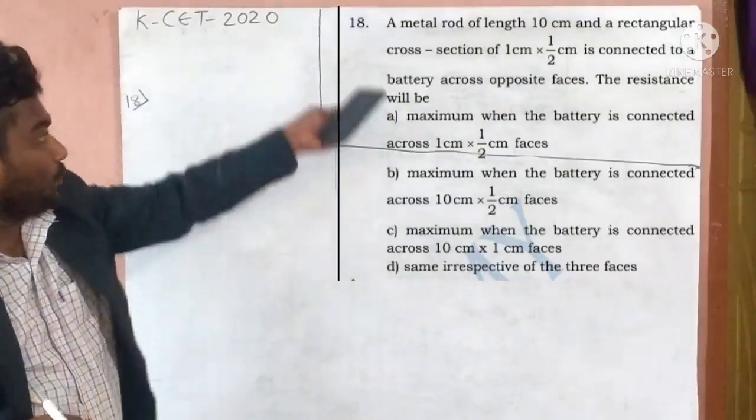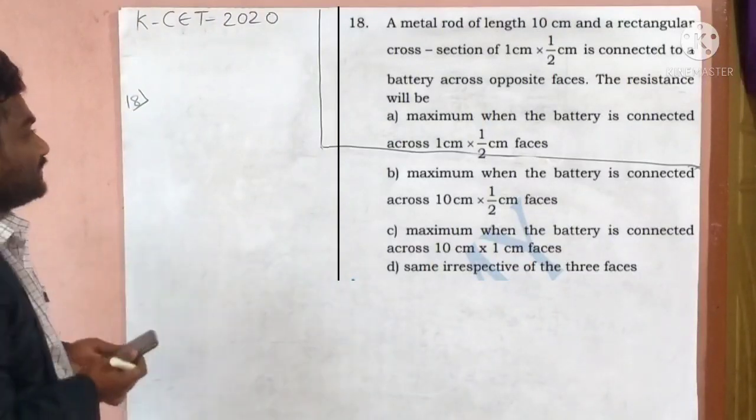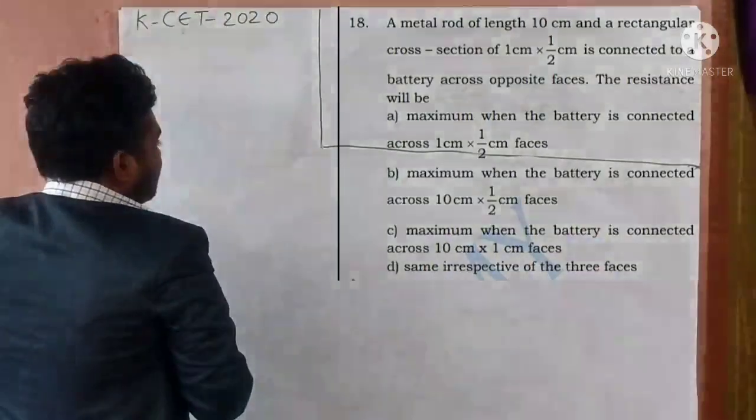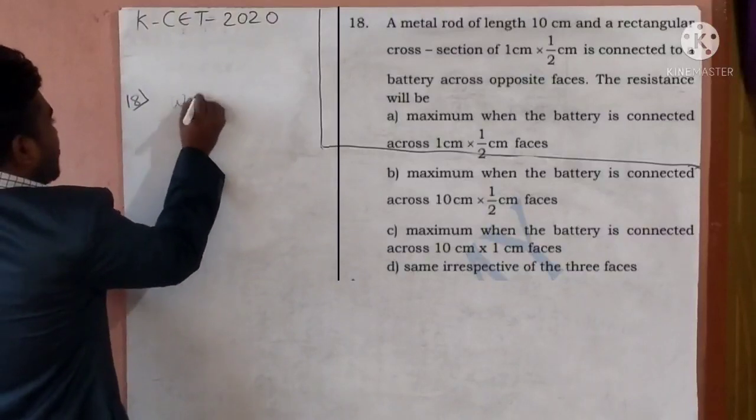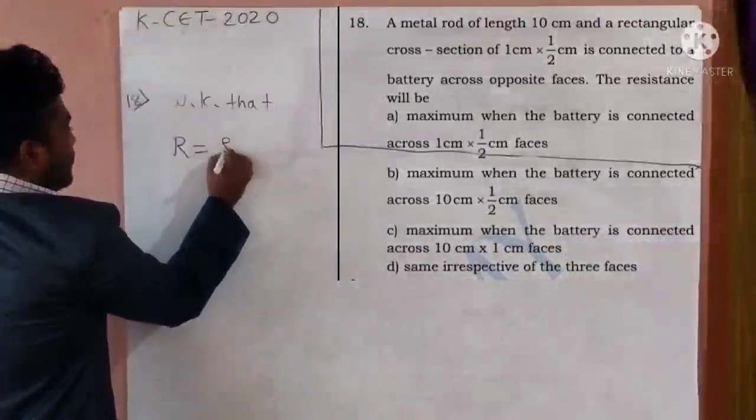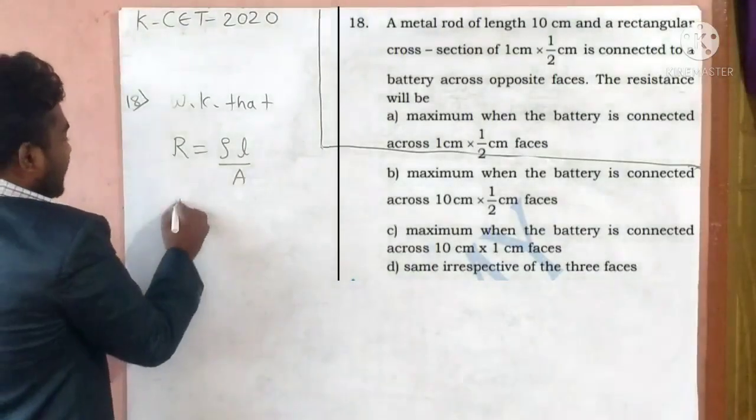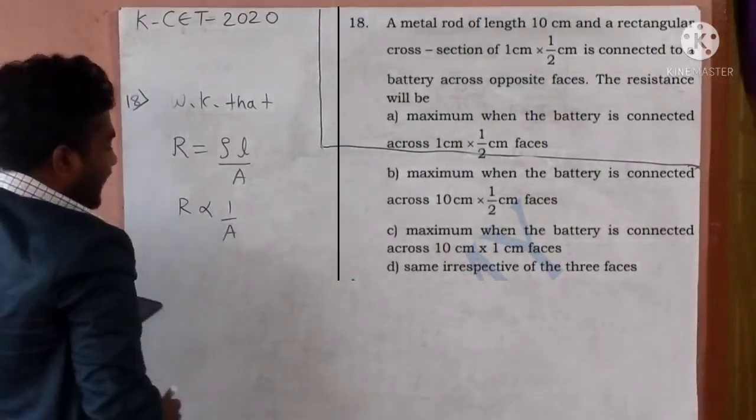Yes. Eighteenth question. Go through the question. Just go through the question. Eighteenth question. Go through the question. Yes. We know that resistance is equal to rho L upon A. Royal upon A. So R is inversely proportional to A.